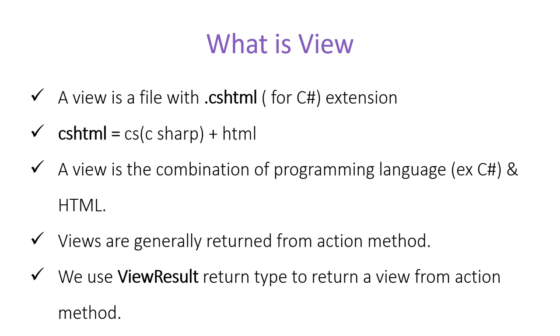We use the ViewResult return type to return a view from an action method. Since you are returning something special, we cannot use a normal return type — like returning a class or string. Now that we have to return a view, the return type of that action method will be ViewResult.